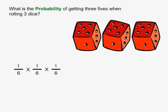When we multiply these fractions together, we get 1 over 216, which in decimal form rounds to 0.0046296, and in percentage form gives 0.46%.